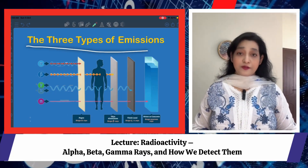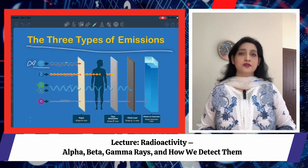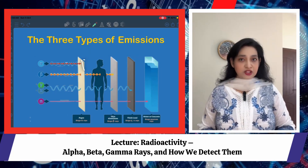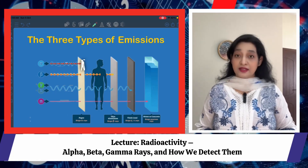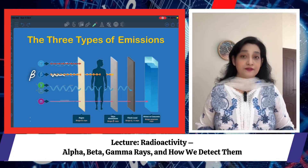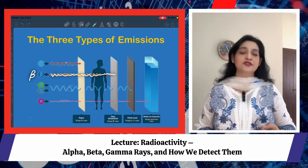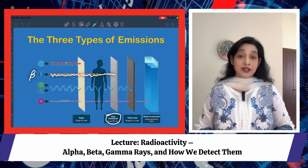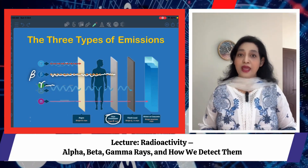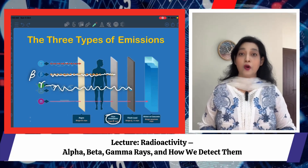There are three main types of radiation. Number one: alpha — helium nuclei, two protons and two neutrons, heavy and positively charged, with weak penetration, stopped by paper or skin. Number two: beta — fast-moving electrons, negatively charged, more penetrating than alpha, stopped by an aluminium sheet. Number three: gamma — electromagnetic waves, no mass, no charge, highly penetrating.